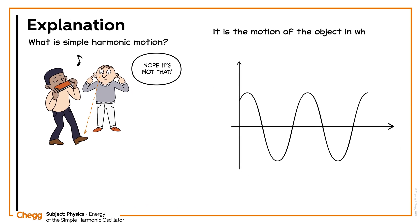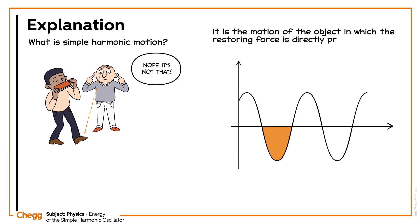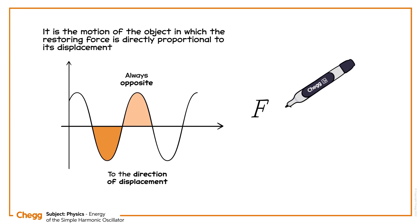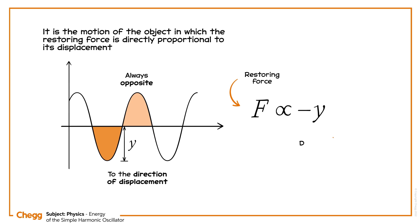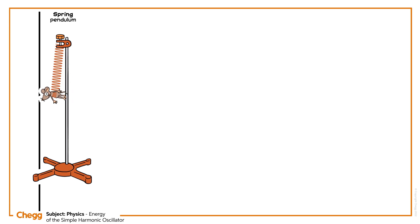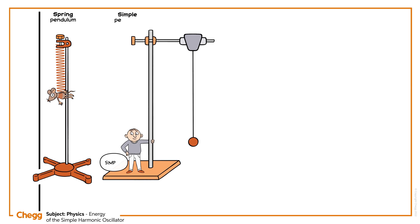Simple harmonic motion is the motion of an object in which the restoring force is directly proportional to its displacement, and this restoring force is always opposite to the direction of displacement. F is directly proportional to negative y, where F is the restoring force, y is the displacement of the oscillator, and the negative sign indicates that the direction of displacement is opposite that of the restoring force. The objects that execute simple harmonic motion are called simple harmonic oscillators. The best examples are the spring pendulum and simple pendulum.